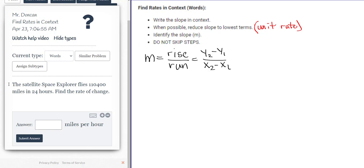Alright. So the satellite Space Explorer flies 110,400 miles in 24 hours to find the rate of change. Our final answer is going to be miles per hour. So to give you context, if it says miles per hour, I'm going to take the miles that they gave us in this problem and express it over the hours. Literally,